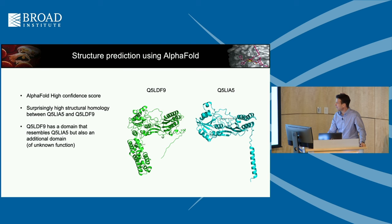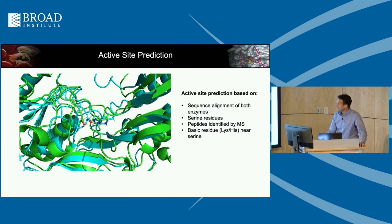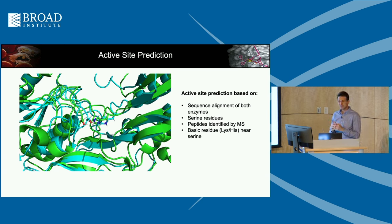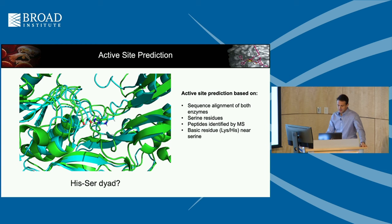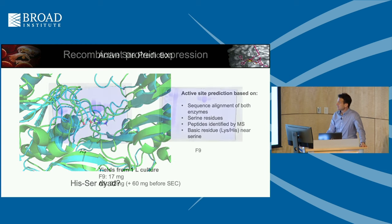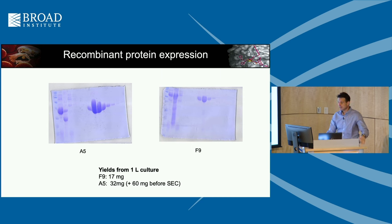AlphaFold analysis showed similar fold types. F9 and A5 overlaid very similarly, and F9 has an extra domain of unknown function. They have two residues consistent with a serine protease — a serine and a histidine as base — but we couldn't find a third aspartate residue typically part of the catalytic triad, so we don't know if this is just a dyad. When we try to express the full-length proteins with the lipid domain, they just don't express at all.